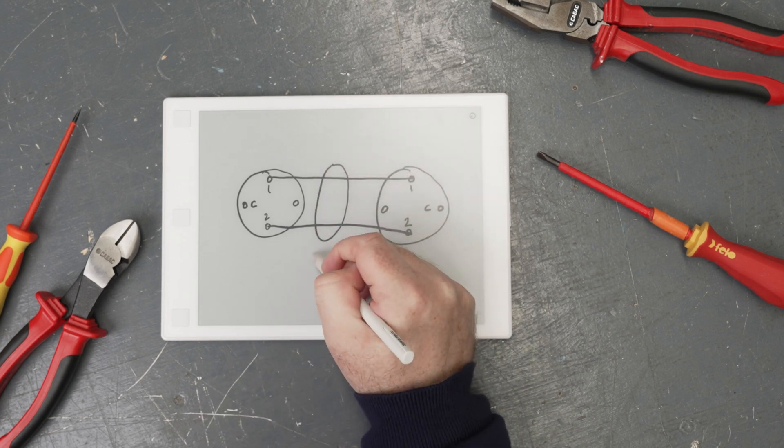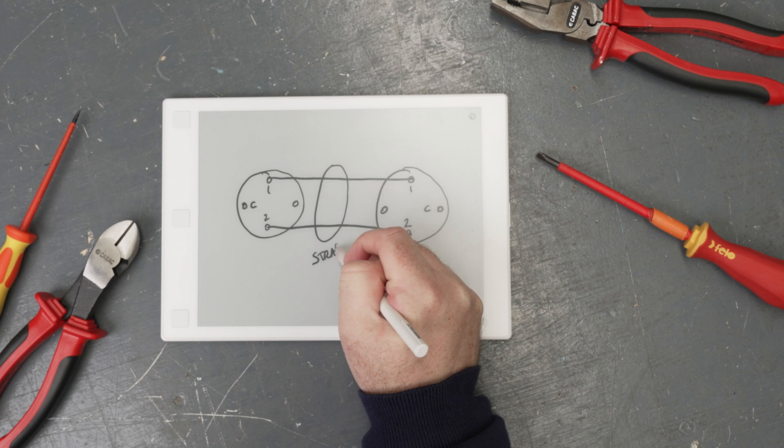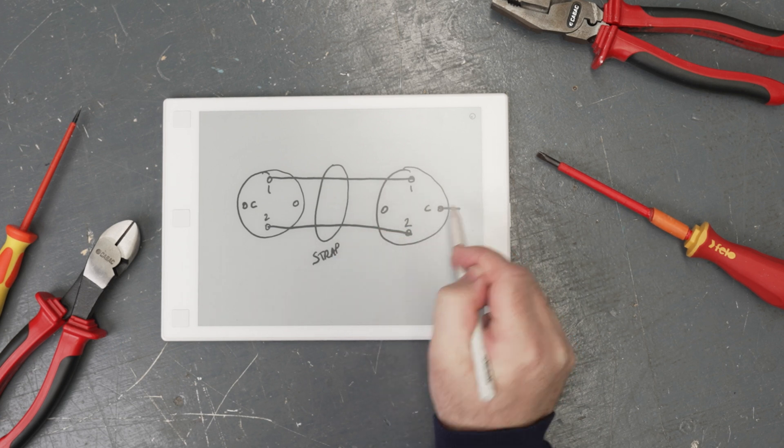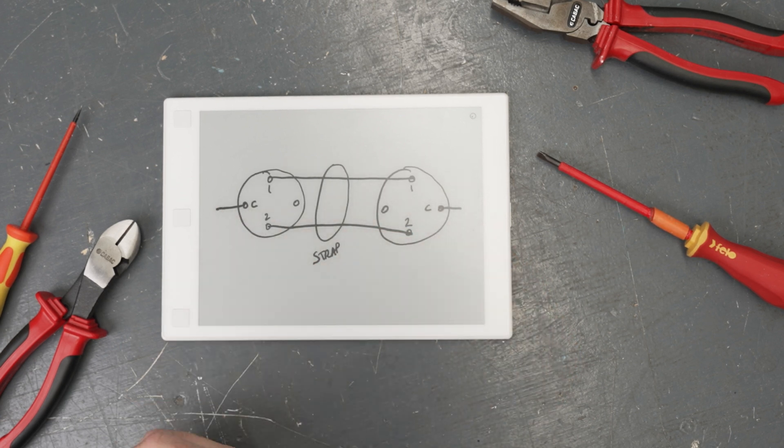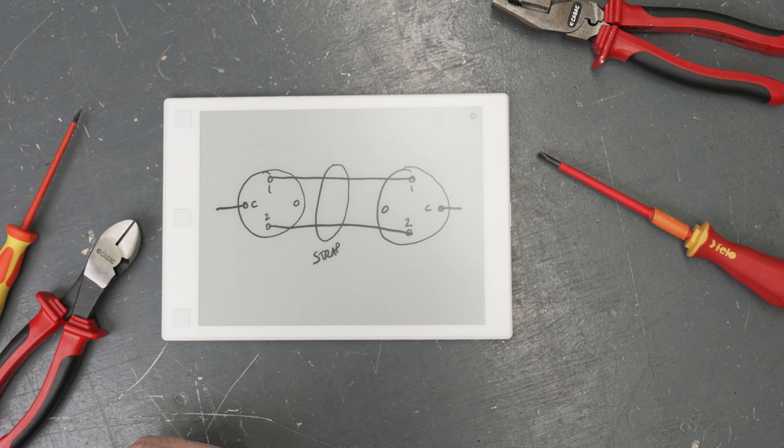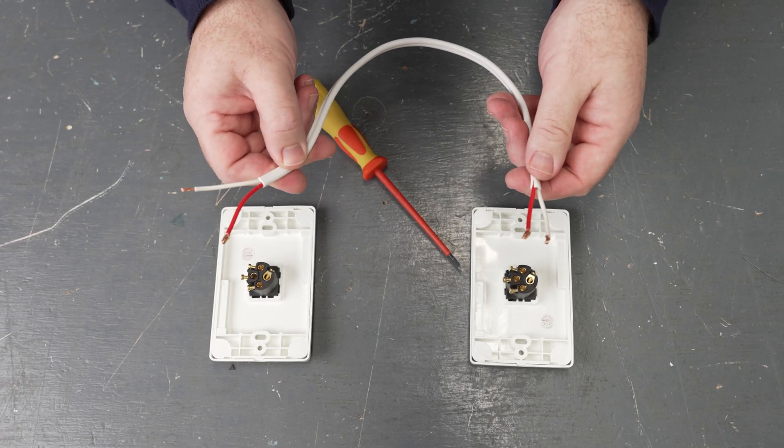Remember, we call this our strap or strapper cabling. From the common and the common, we will run our hard actives or switched actives back to the 413 socket or lighting point.